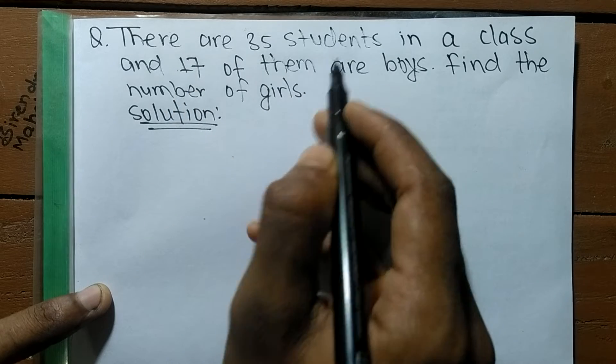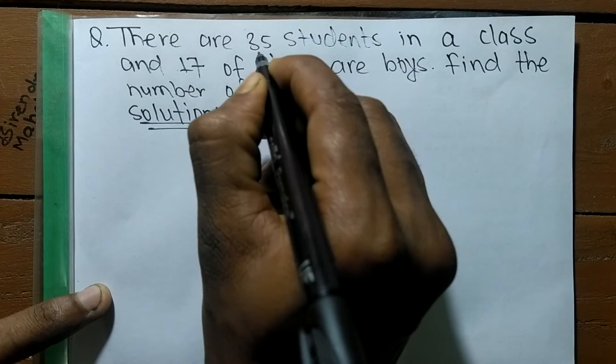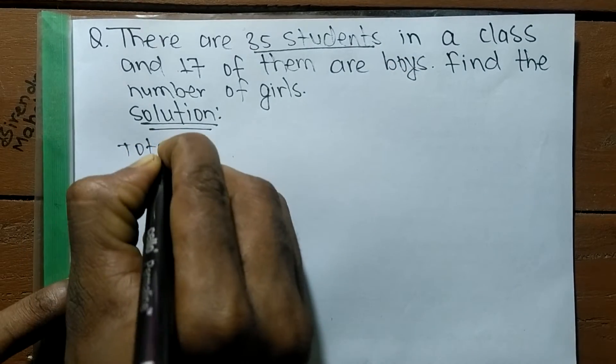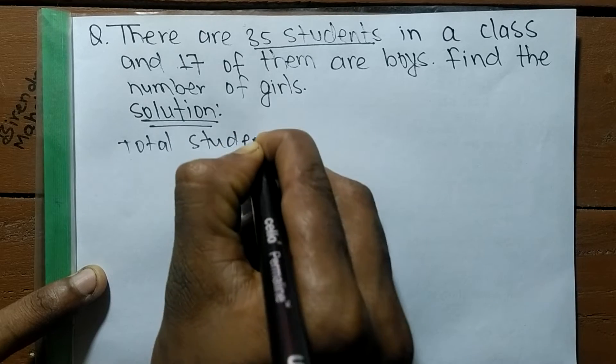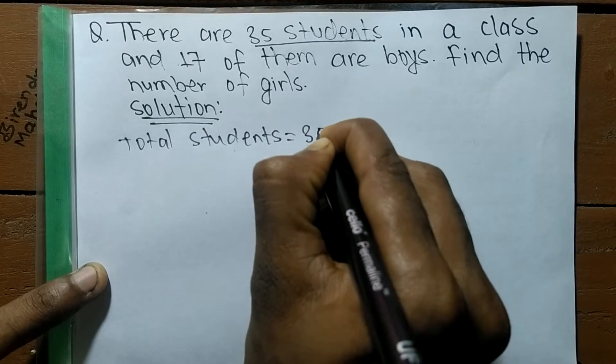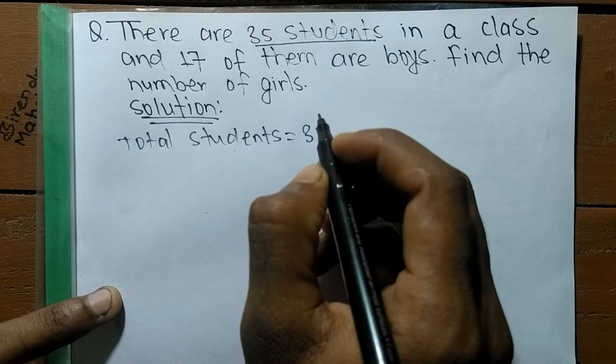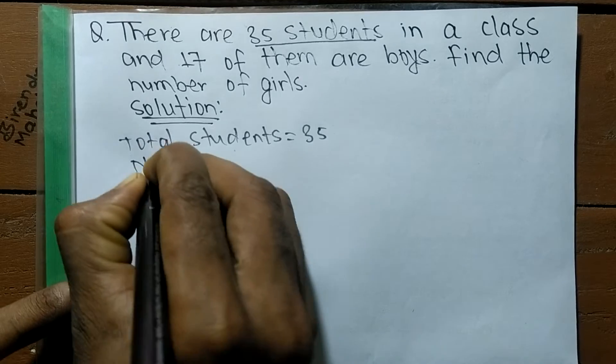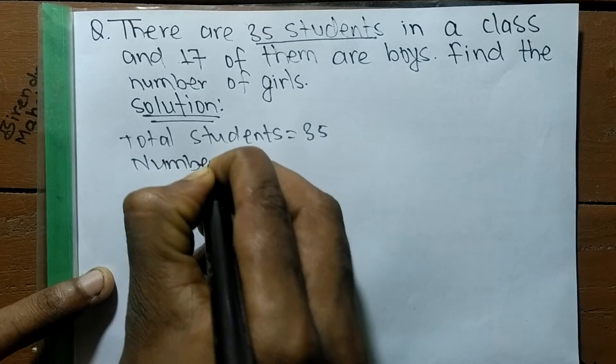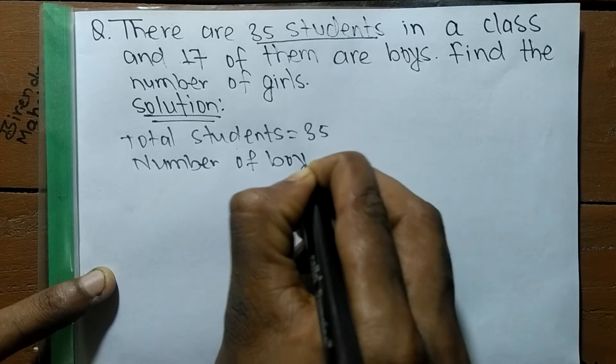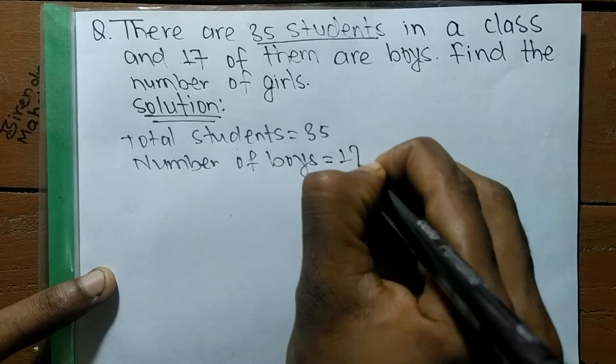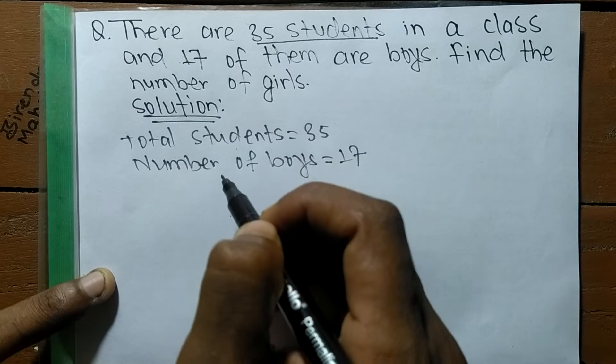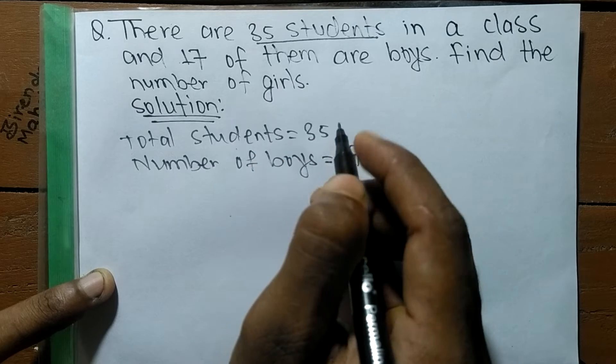Here we have given there are 35 students in a class, so total students is 35. Also, we have given 17 of them are boys, so number of boys is equal to 17. And we have to calculate and find the number of girls.